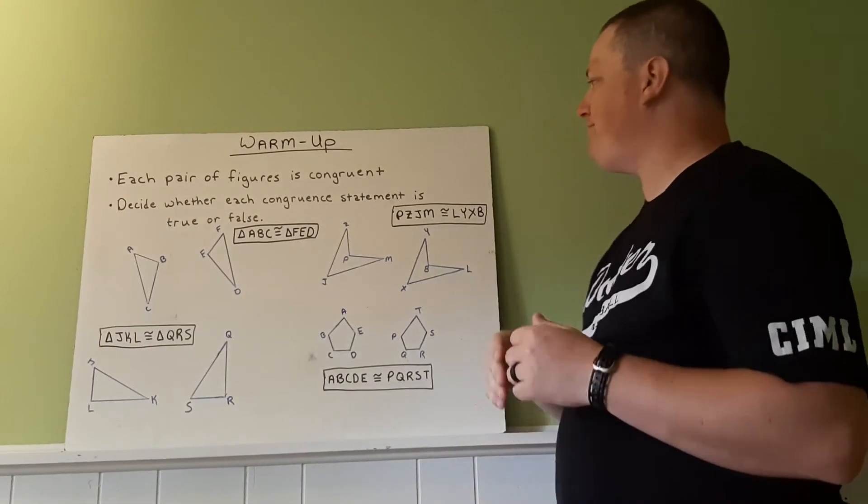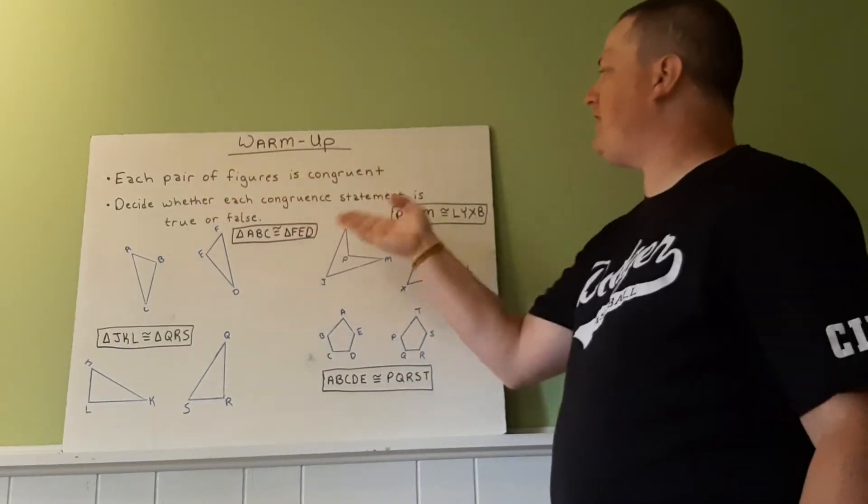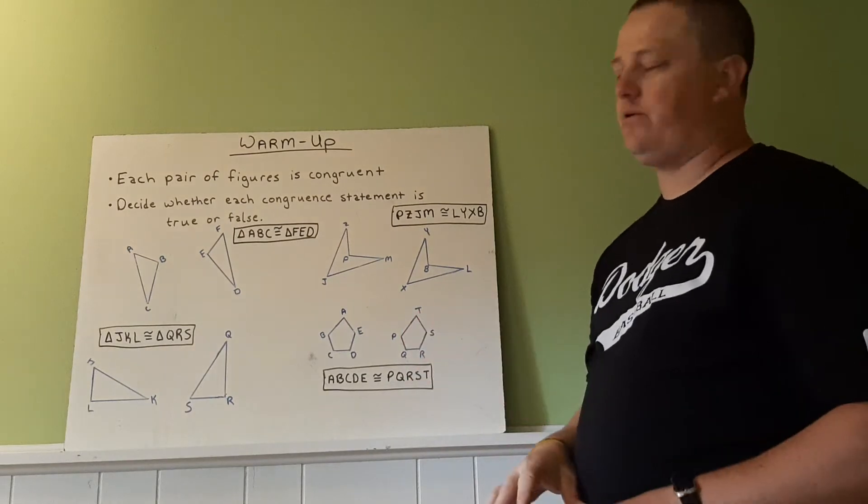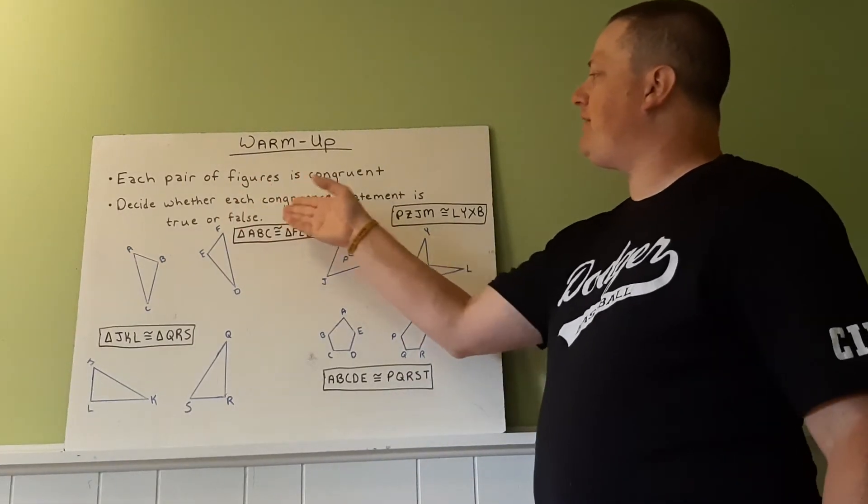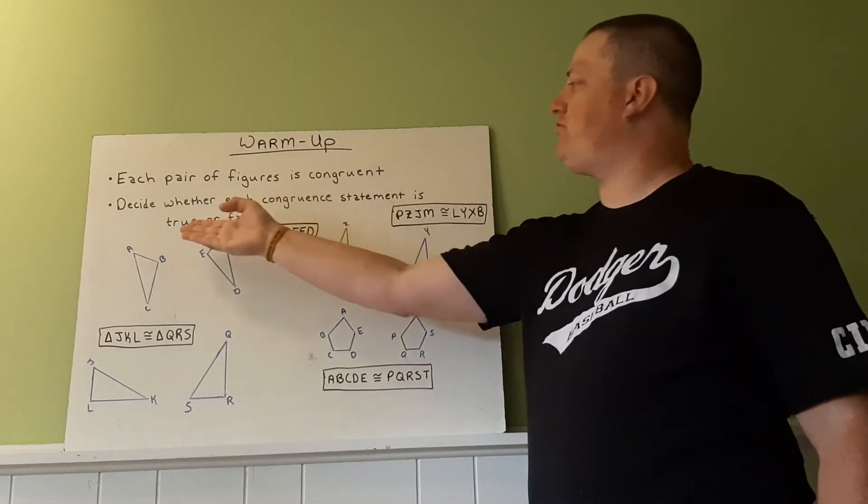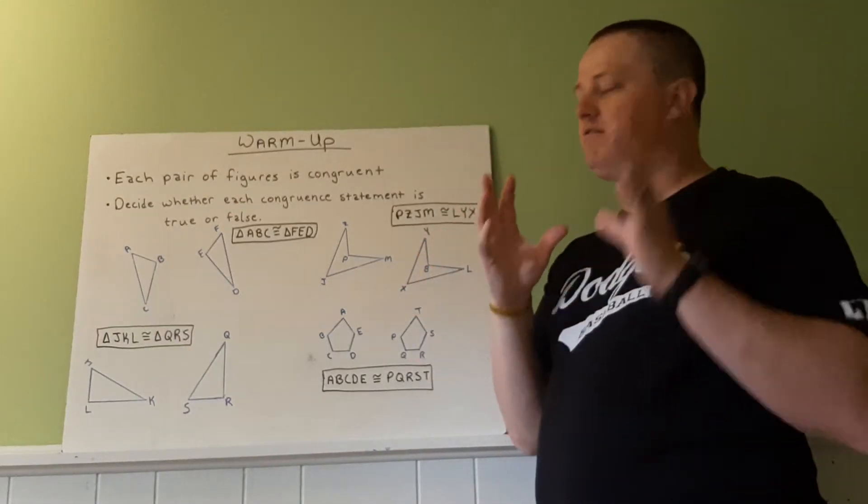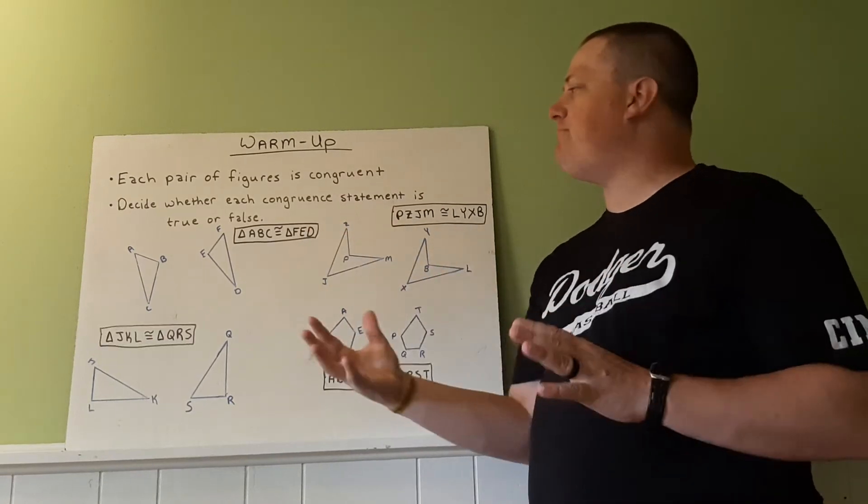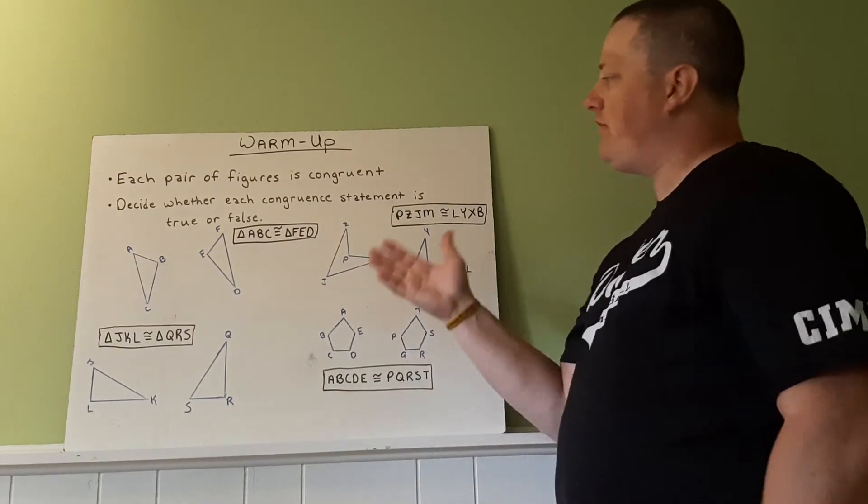All right, so for this one, each pair of figures is congruent. So this triangle and this triangle are congruent. Decide whether each congruent statement is true or false. So just by using your visual and looking at it, is this how you would match up the figures? So for example,